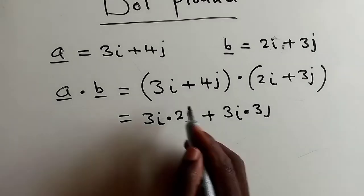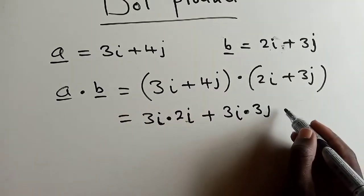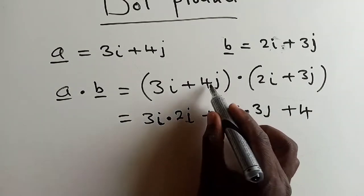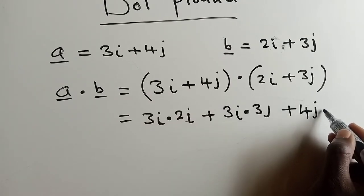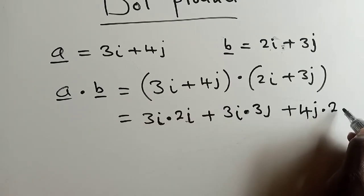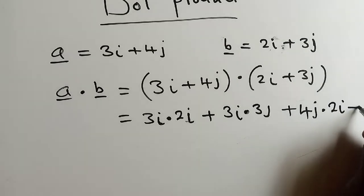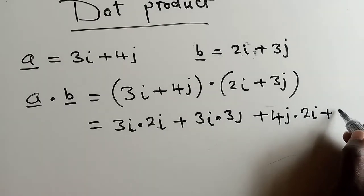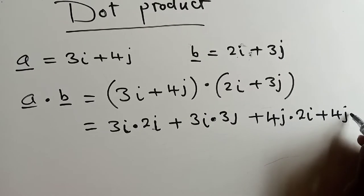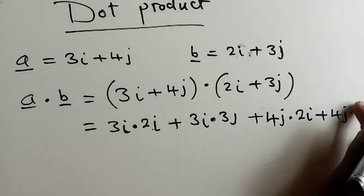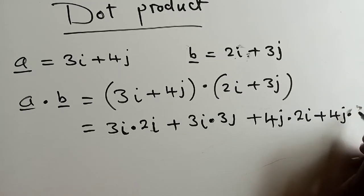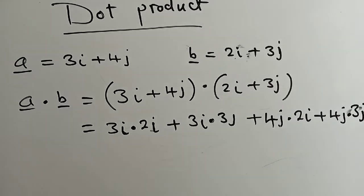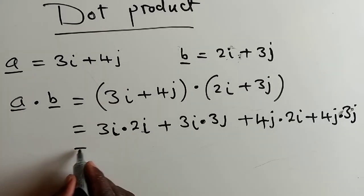So where are we? We're here. We've multiplied this by this. Now we start the other one. This is 4J multiplied by 2I plus 4J multiplied by 3J. So this is how it works.